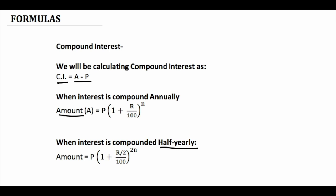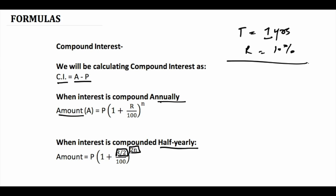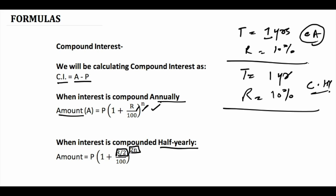When compounded half yearly, the amount formula uses r divided by 2 and time period doubled to 2n. To understand why, let's take an assumption where the time period is one year and rate of interest is 10 percent compounded annually — the formula is simple. Now if the time period is one year and rate of interest is 10 percent but compounded half yearly, it means that after six months it will be compounded.